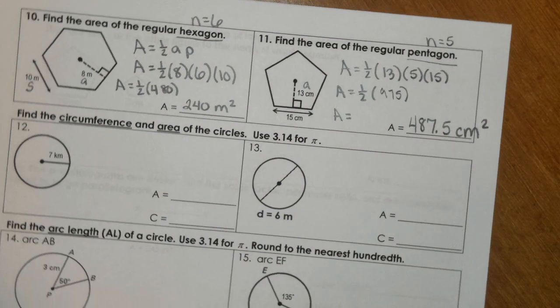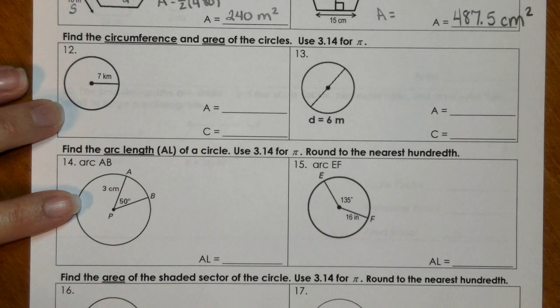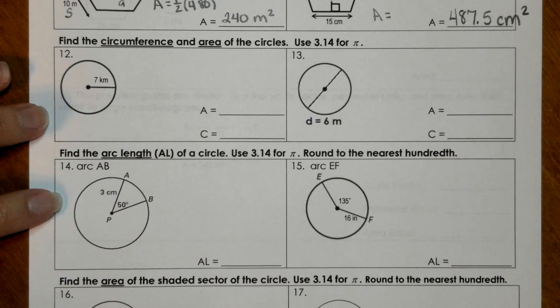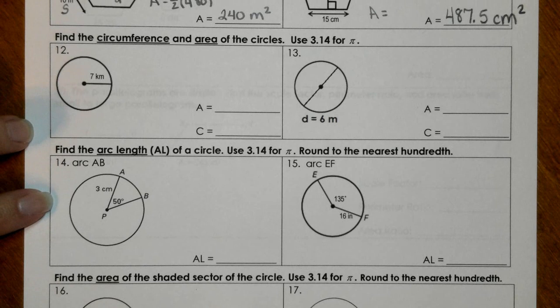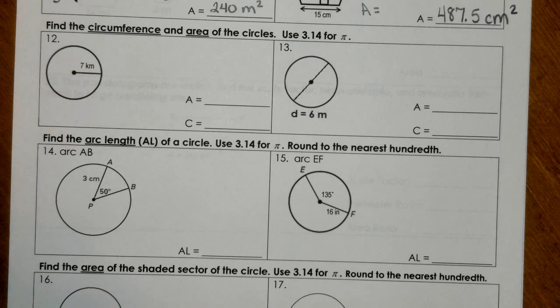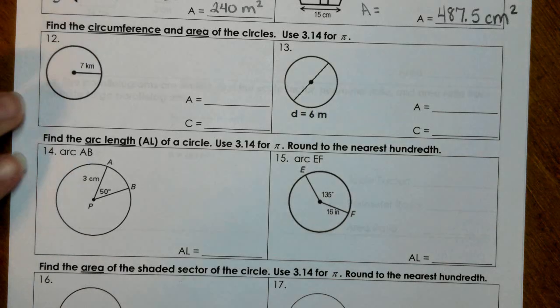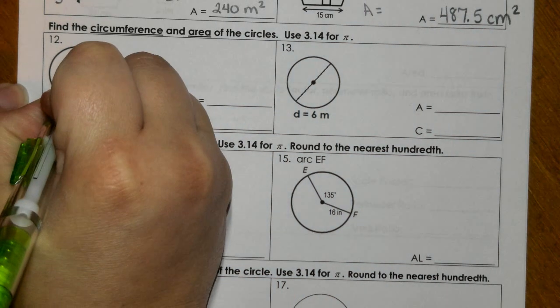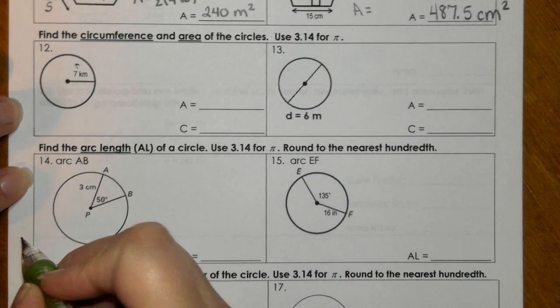For number 12, we are finding the circumference and the area of both of these circles. It says we have to use 3.14 for pi, and it doesn't have any rounding rules here. So we're just going to leave our answers as is. First, we know that our radius is 7.